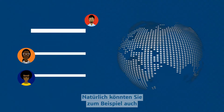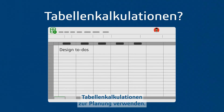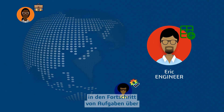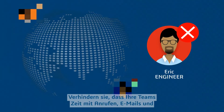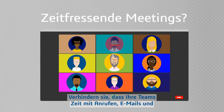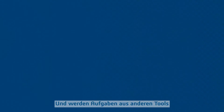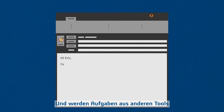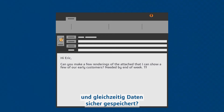Sure, you can use spreadsheets for some of that planning. But will they provide real-time visibility into the progress of tasks across different departments? Will they keep your teams away from time-wasting phone calls, emails, and check-in meetings? And will other tools' to-dos tie directly to your design data while storing that data safely?